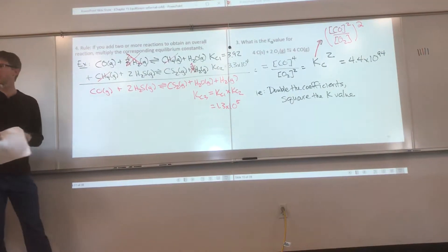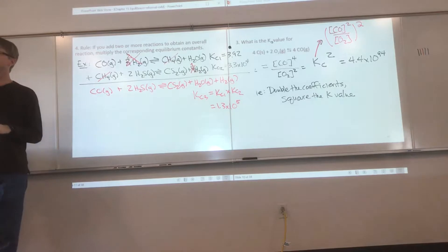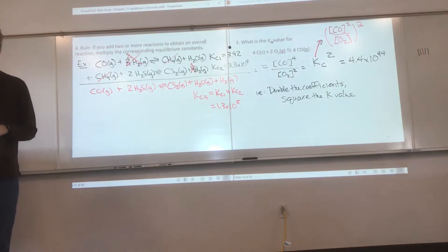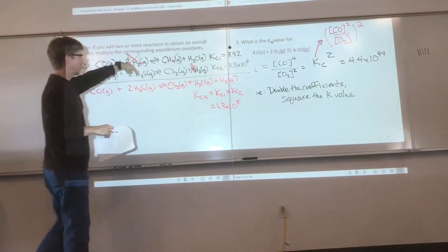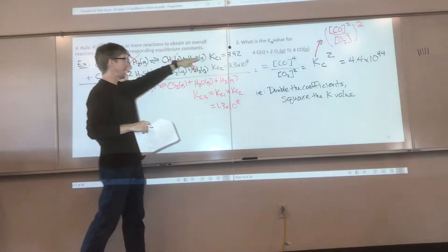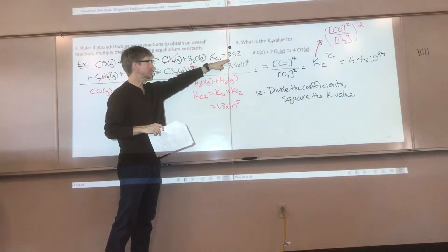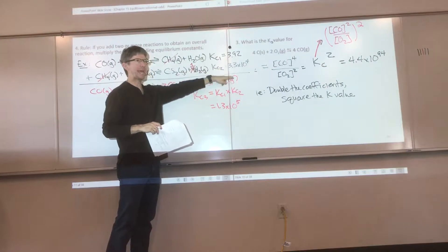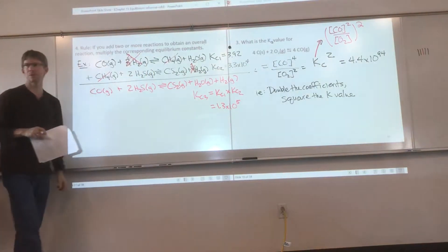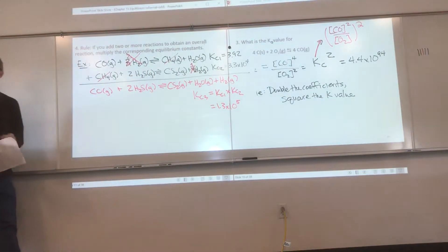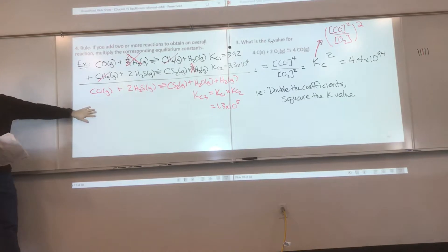Add up what's left: we have two reactants and three products. Kc3 will be the product of Kc1 times Kc2, and it equals 1.3 × 10^3. Whereas for last semester with delta H values you added them, this time we multiply. Any questions about that?